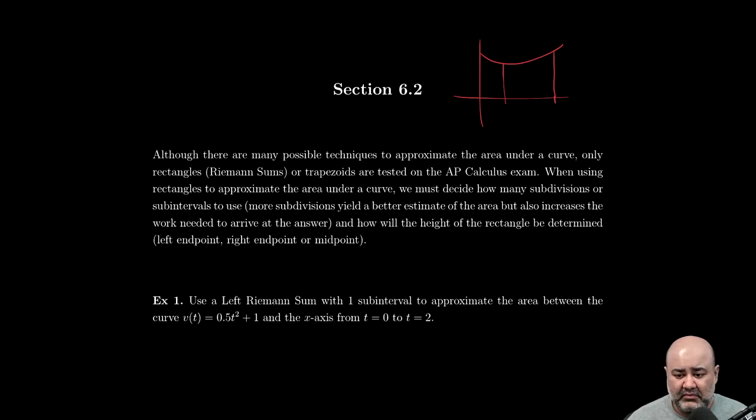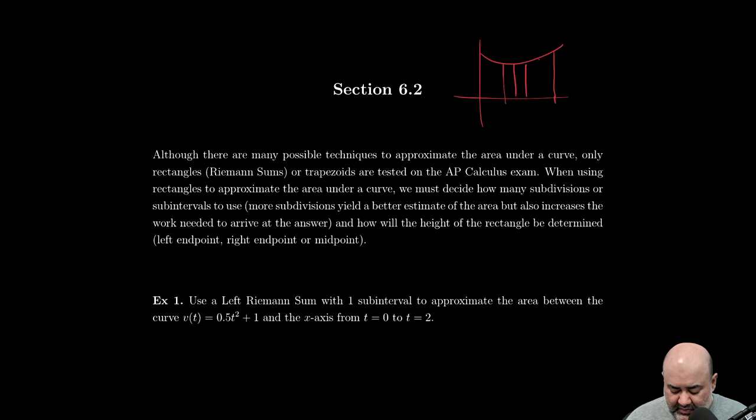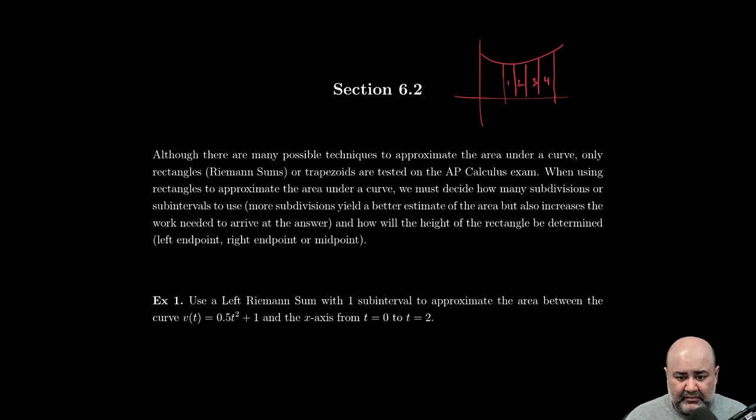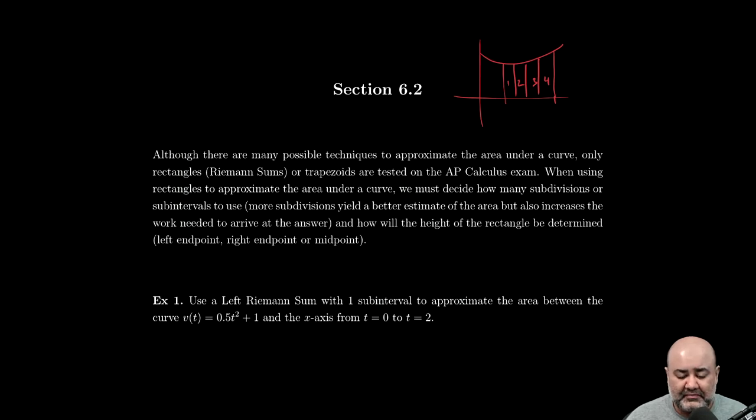So here, when we're using rectangles to approximate the area under a curve, there's two decisions that have to be made. Number one: how many sub-intervals or subdivisions do you want? So that's basically how many equidistant spaces do you want to split this region into? So here I have one, two, three, four. As you can imagine, the more subdivisions you have, the better estimate you're going to get. But keep in mind that the more subdivisions you have, you also have to do significantly more computations to get there. And secondly, the other thing that you have to determine is how exactly is the height of the rectangle being determined?